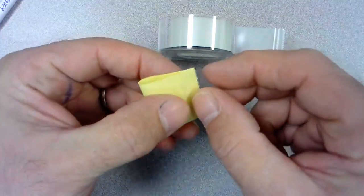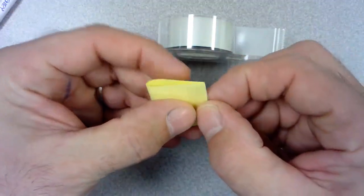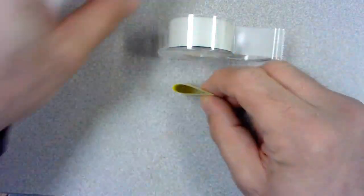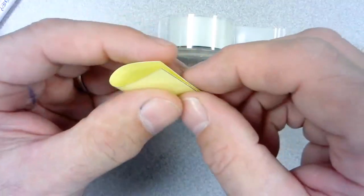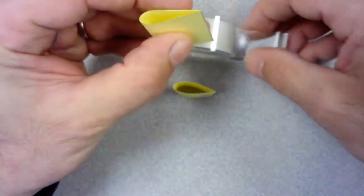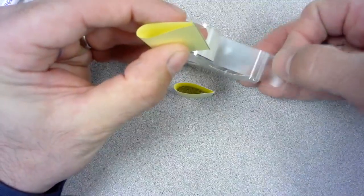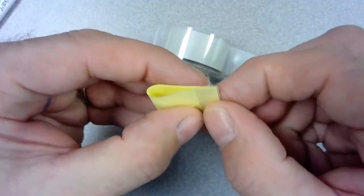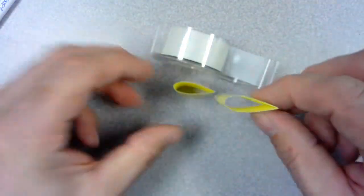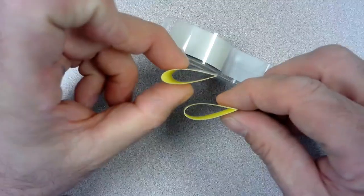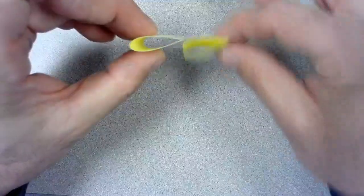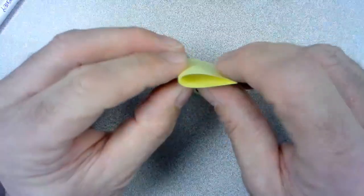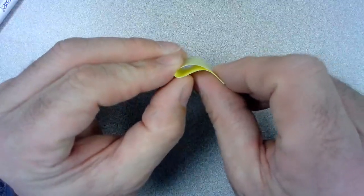I'm going to do the same thing to the other wing shape. And now I have two identical wing shapes.